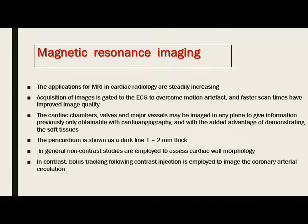On magnetic resonance imaging, applications for MRI in cardiac radiology are steadily increasing. Image acquisition is gated to the ECG to overcome motion artifact, and faster scan times have improved image quality. The cardiac chambers, valves and major vessels may be imaged in any plane, giving information previously only obtained with cardiac angiography, with the added advantage of demonstrating soft tissues. The pericardium is shown as a dark line one to two millimeters thick. Gated contrast studies are employed to assess cardiac wall morphology, while bolus tracking following contrast injection is used to image the coronary arterial circulation.